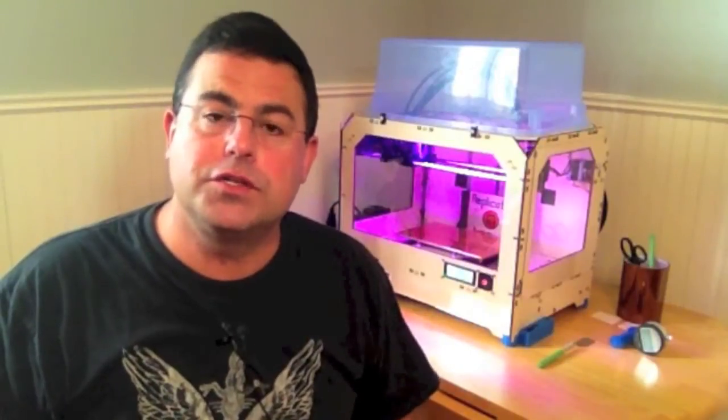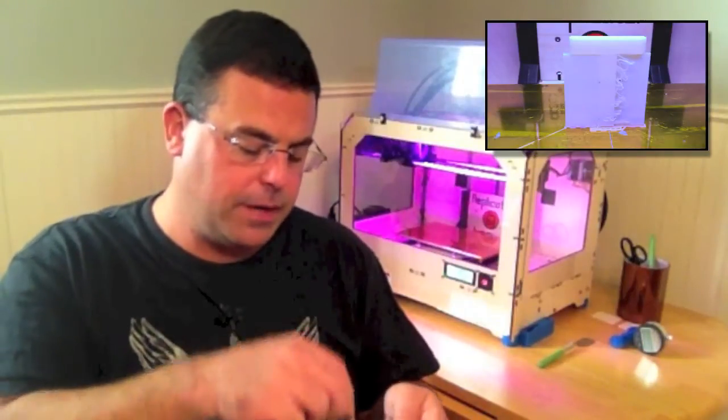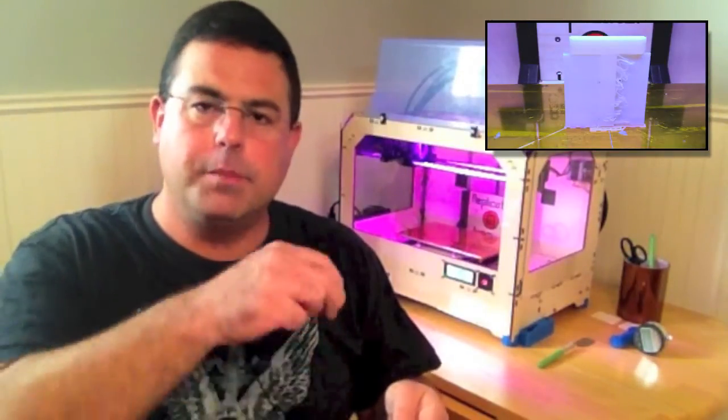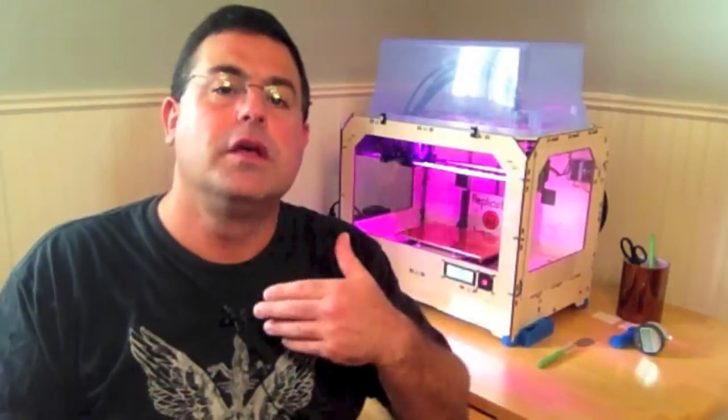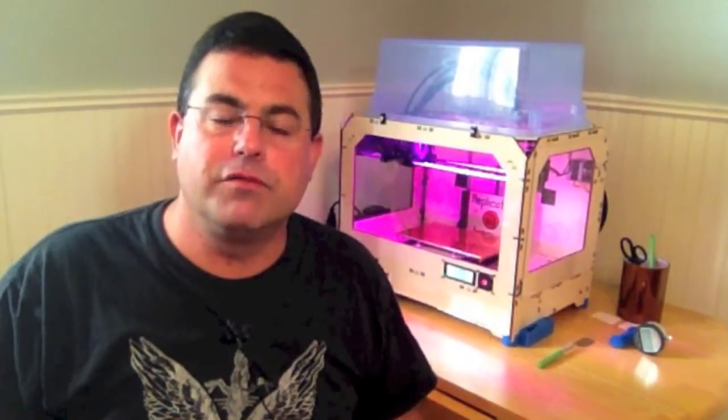So the solution is called support. Support is where the printer will actually print thin little strands of plastic up from the bottom, from the build plate up to support the cross arms of the T during the print. And then after you remove the print from the platform, you actually snap away those supports and discard them and you're left with the T. You have to keep those limitations in mind when you design things. I see that on Thingiverse sometimes people throw designs up there and it's basically not printable, at least not in the way they presented it.